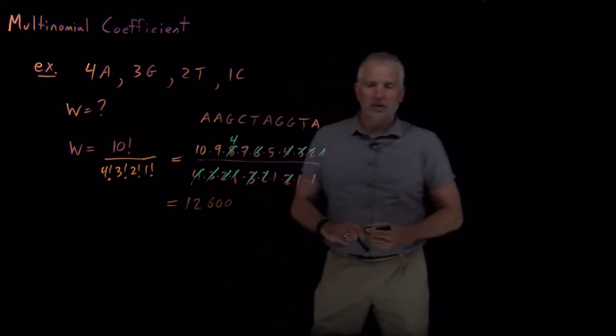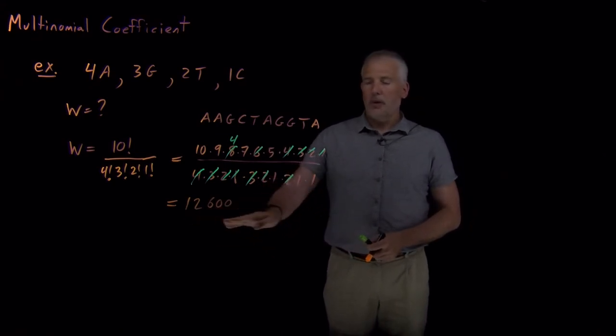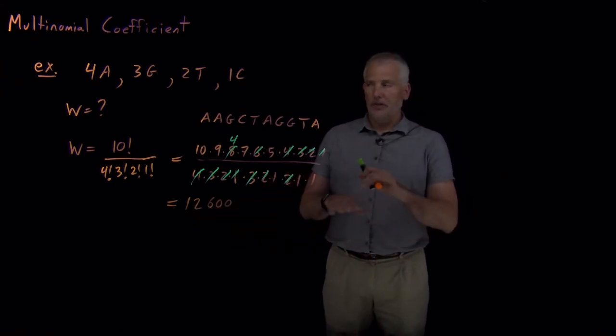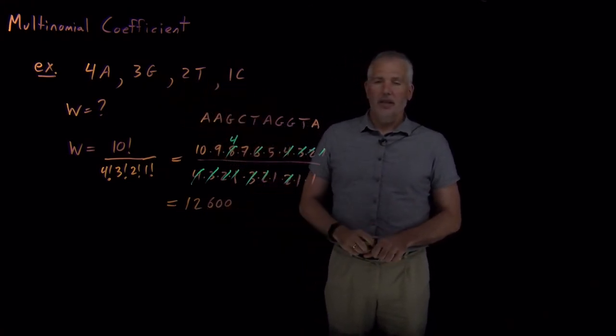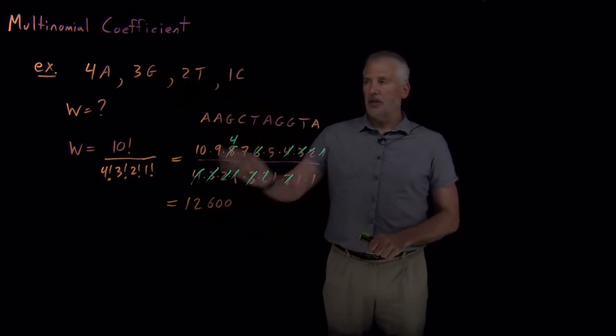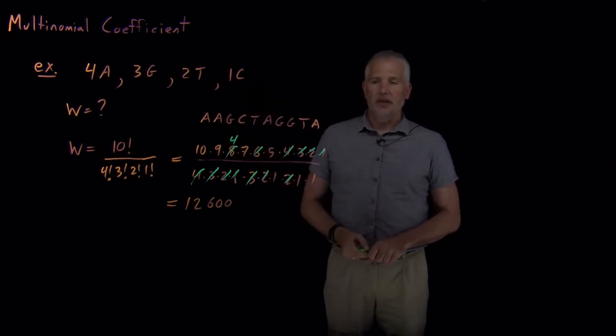So for the numerical answer to this particular question, there's 12,600 ways of shuffling 4 A's, 3 G's, 2 T's, and a C around. So there's 12,600 distinct 10-mers of these bases of DNA.